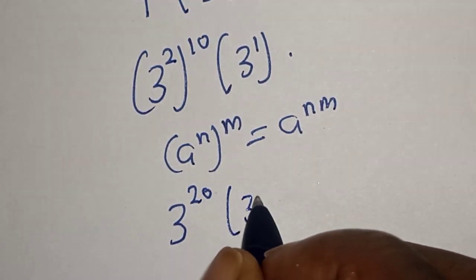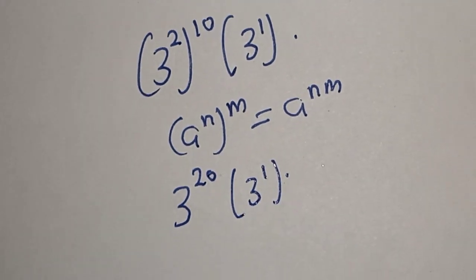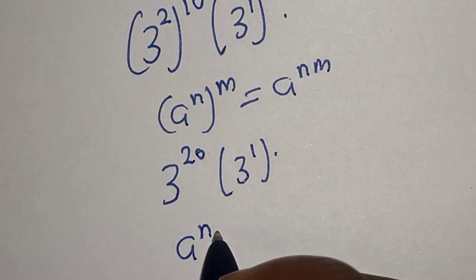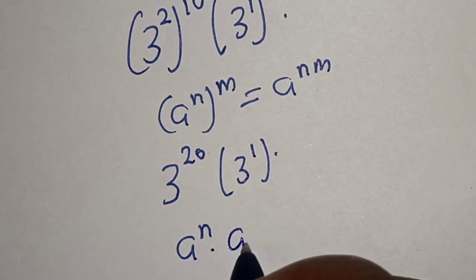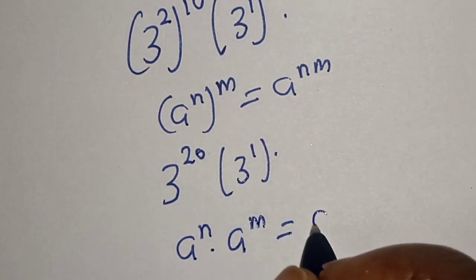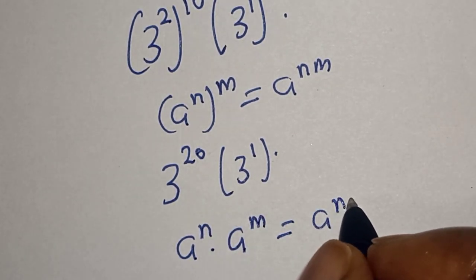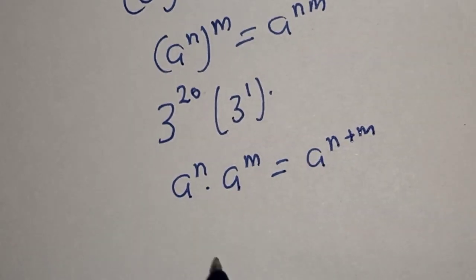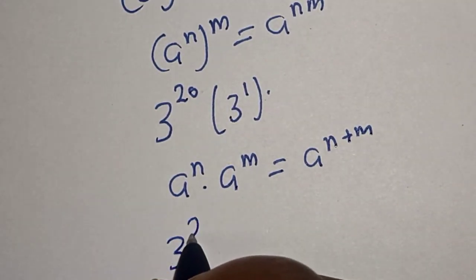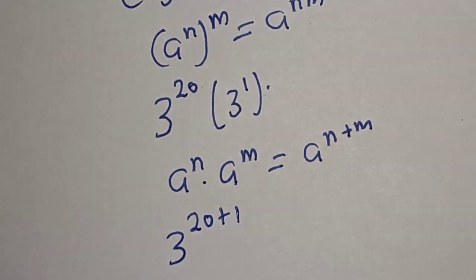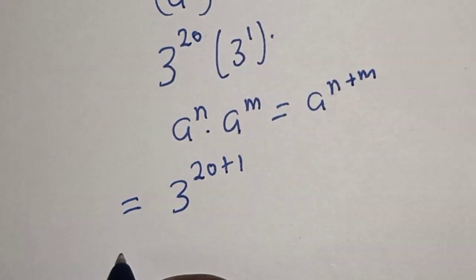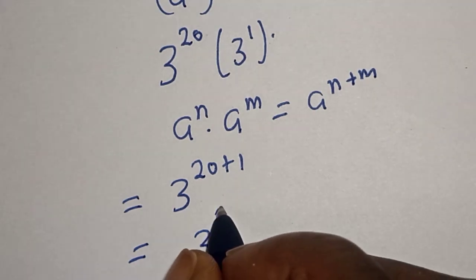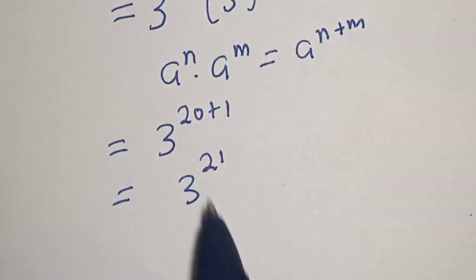Multiplied by 3 raised to power 1. Remember this rule: a raised to power n multiplied by a raised to power m is equal to a raised to power n plus m. And this is 3 raised to power 20 plus 1, which is equal to 3 raised to power 21. The final answer is 3 raised to power 21.